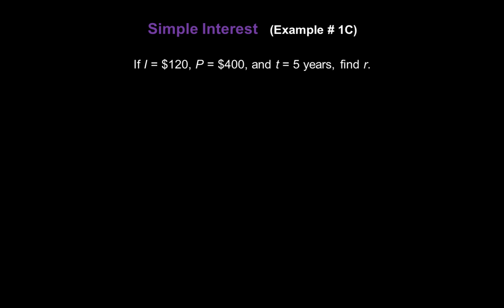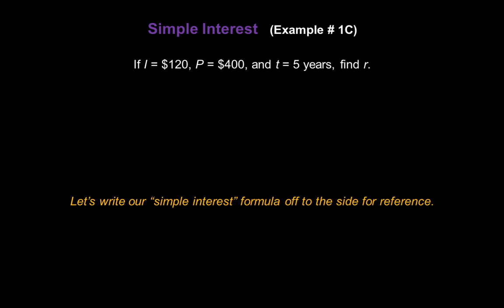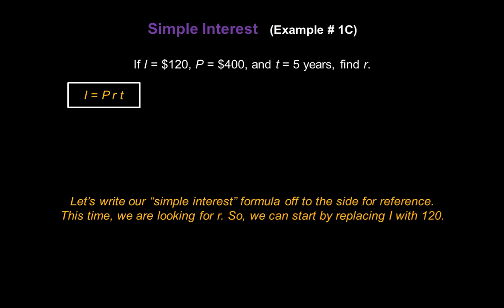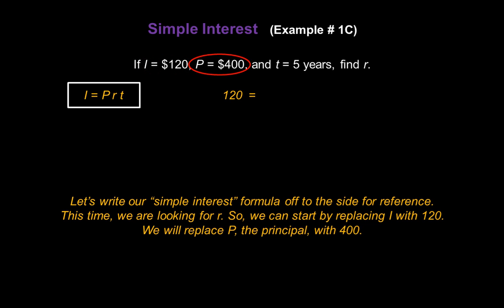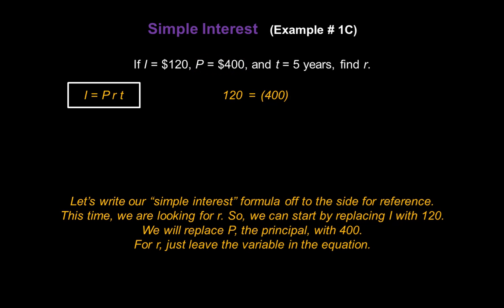Now what if we have an I of $120, P of $400, T of 5 years — what would be the rate R? Again, let's write our simple interest formula off to the side for reference: I equals PRT. This time we're looking for R in the formula. The problem says I is $120, so we can start our equation by replacing I with 120. The principal amount is $400, so we'll replace P with 400. We're looking for R, so just leave that as is. Finally, the time period is 5 years, so we'll replace T with 5.